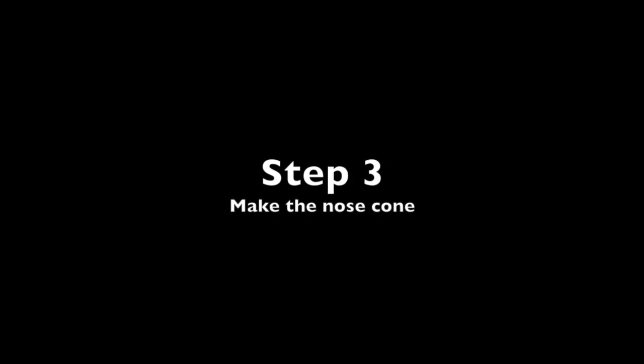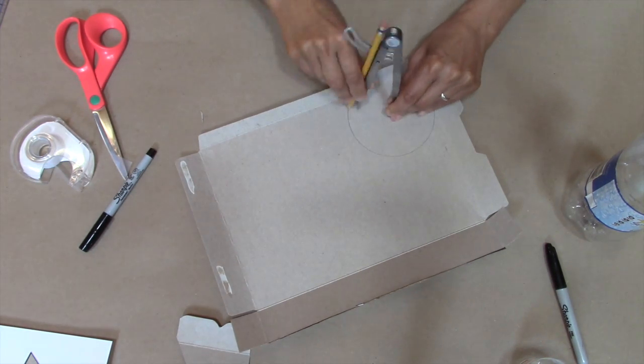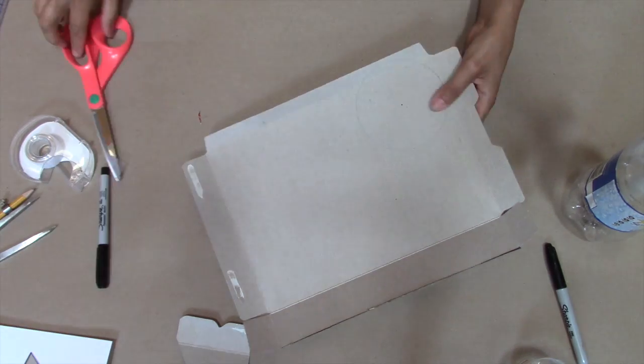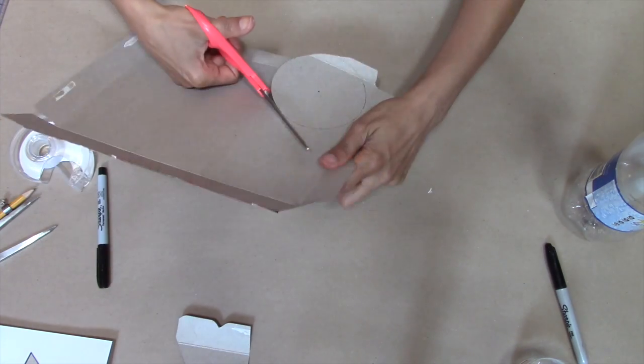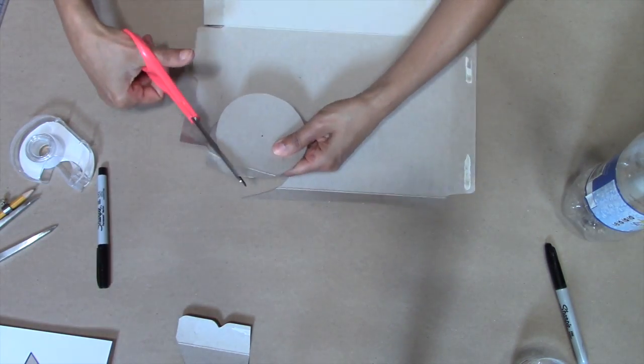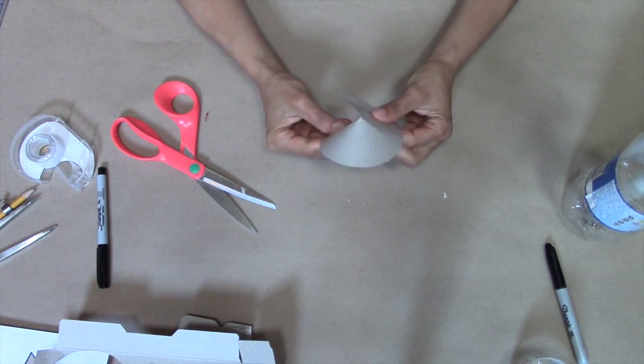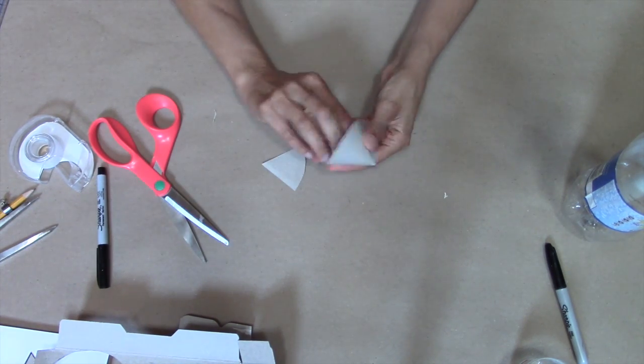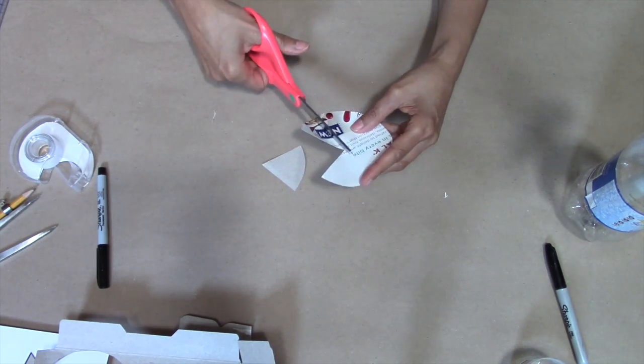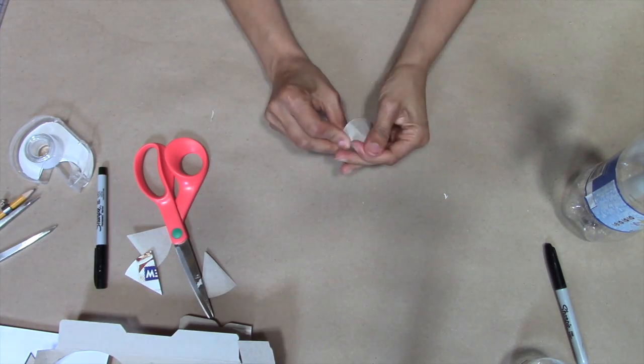The last step is to make the nose cone. This starts with a circle. Mine has a radius of about two inches but you can make this any size. Use a compass to draw the circle, mark the center, then cut it out. Cut a slit from the edge to the center, curve the cardboard to form a cone shape, trim and repeat until you have a cone that you're happy with. You will want to cut the edges to line up without any overlap so that the cone is balanced.